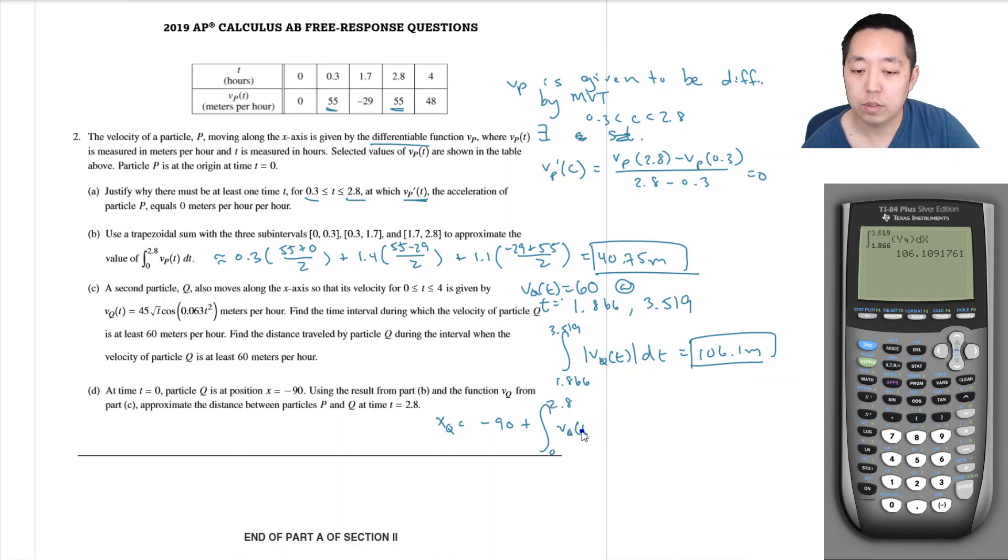vq of t, dt. And so then I just kind of do math 9 again. I'm going to integrate from 0 to 2.8 of vars, yvars function 4, dx.